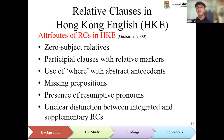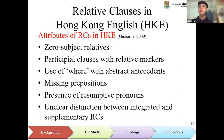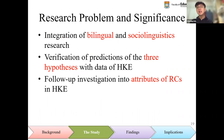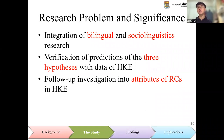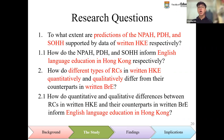From a sociolinguistic perspective, Gibson conducted a corpus-based study on relative clauses in Hong Kong English, and six morphosyntactic attributes were identified. However, this study was conducted on the basis of an incomplete corpus of Hong Kong English, and it was purely qualitative in nature. The present study aims at filling the gap in both bilingual and sociolinguistic research on relative clauses in Hong Kong English, by verifying the predictions of the three hypotheses with data of Hong Kong English, and following up the investigation into the attributes of relative clauses with a complete corpus. In particular, there are two major research questions related to the bilingual aspect and the sociolinguistic aspect, respectively.